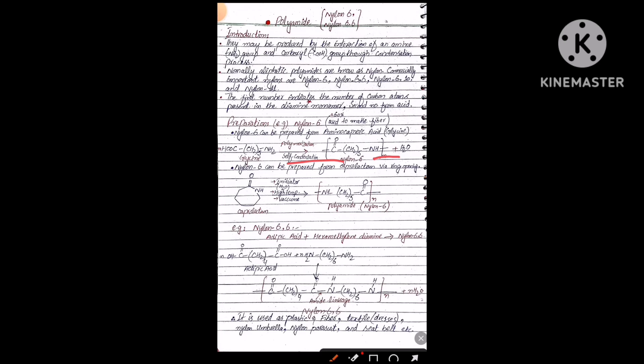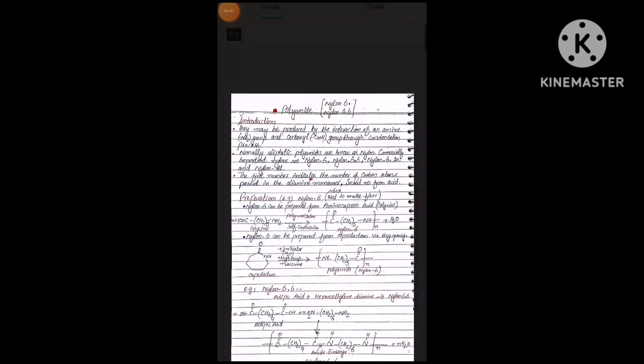Second method: nylon 6 can be prepared from caprolactam via ring opening. This is caprolactam. As we already studied, for the ring opening process we need an initiator. Here the initiator may be water. We need high temperature and vacuum. These initiators and these initial conditions are required for ring opening.